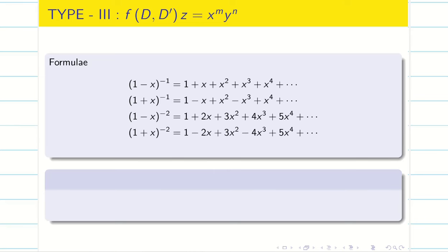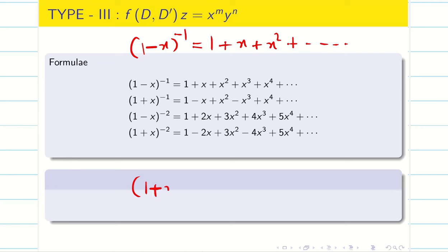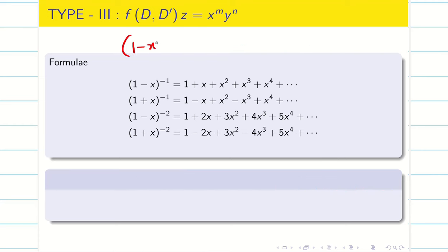Do you remember these formulas? It is very easy to remember. (1 minus x) all power minus 1 is 1 plus x plus x square, etc. When you get (1 plus x) all power minus 1, simply odd powers will be negative and the even powers will be positive. When you get (1 minus x) whole power minus 2, the same formula: 1, x, x square, x cube, etc. If you remember the natural numbers, the formula will be very easy to remember.